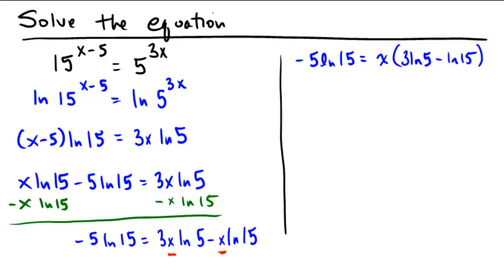Okay, so as painful as that looks, we're actually done now, because all we have to do is divide both sides to isolate the x by 3 ln 5 minus ln 15. Not a particularly pretty number, but a number all the same.